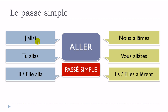One more time: j'allai — final S not pronounced. Tu allas — final S not pronounced, same pronunciation as il alla. Nous alâmes — make the liaison, final S not pronounced. Vous alâtes — same, la liaison. Ils allèrent, elles allèrent — the ENT at the end is not pronounced. So: j'allai, tu allas, il alla, elle alla, nous alâmes, vous alâtes, ils allèrent, elles allèrent.